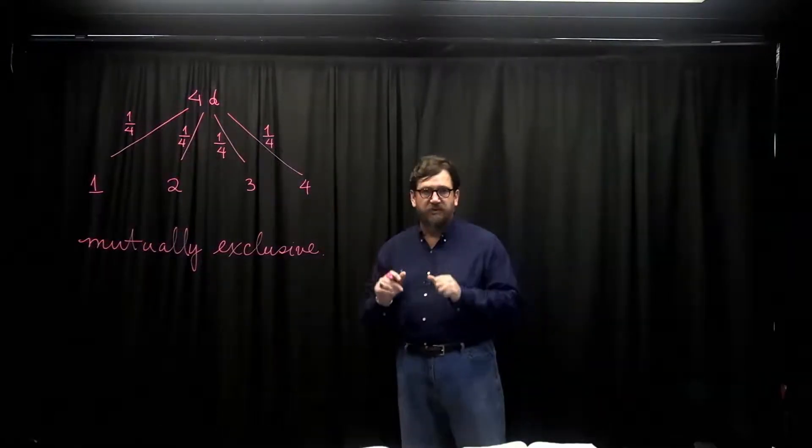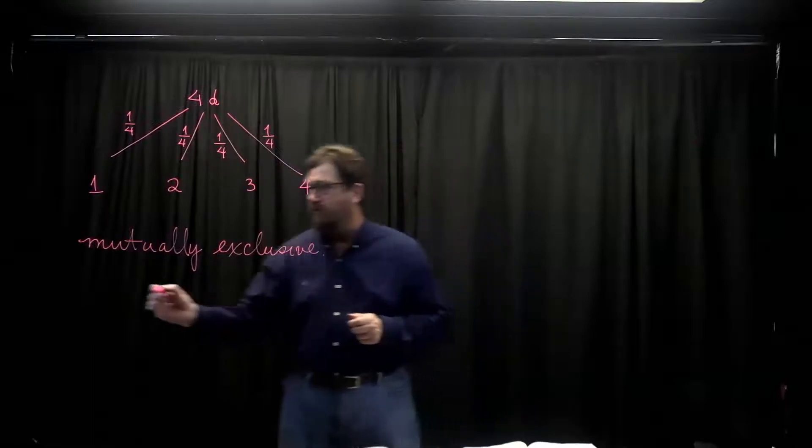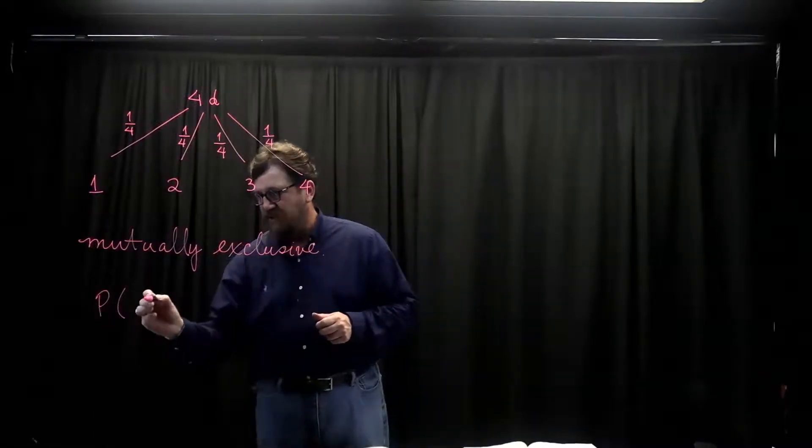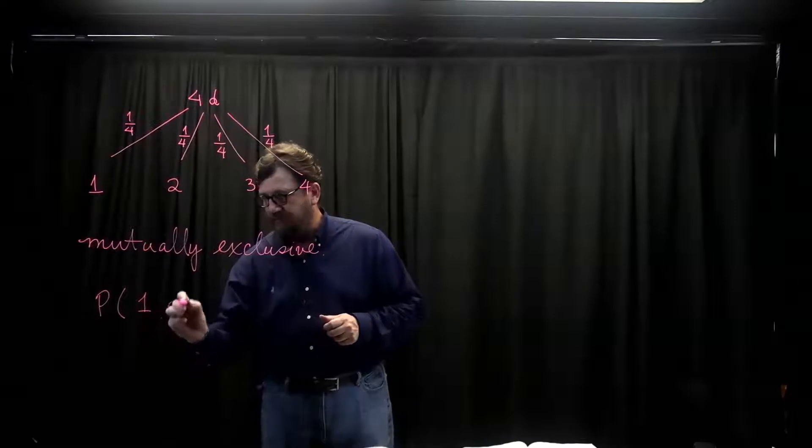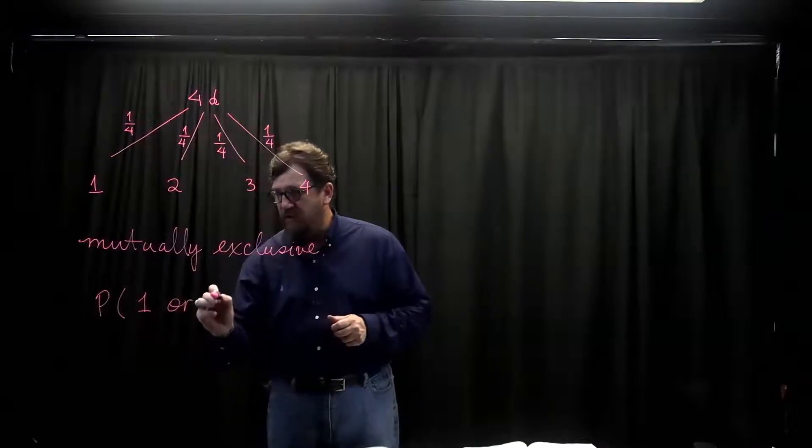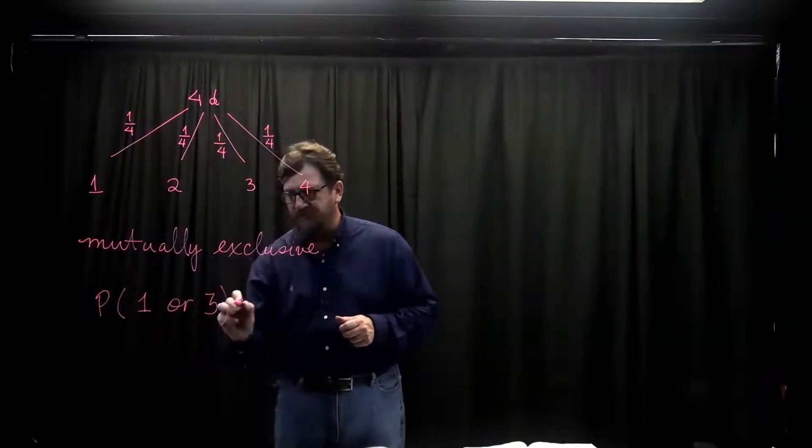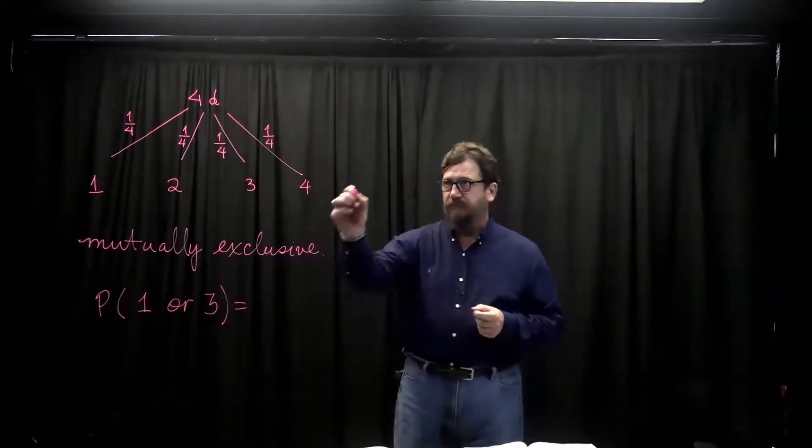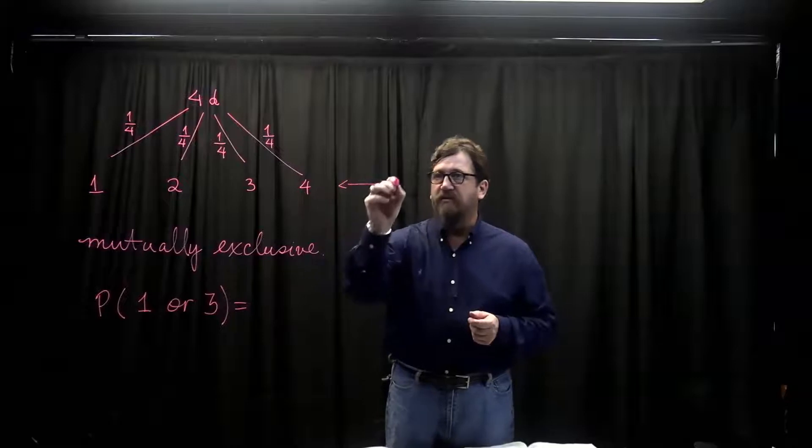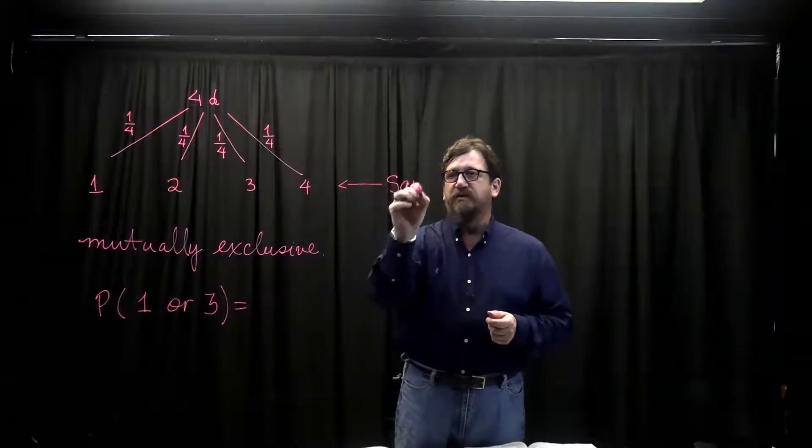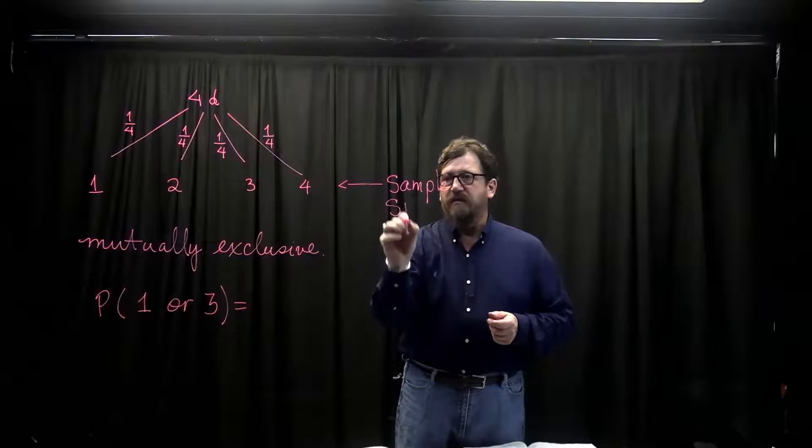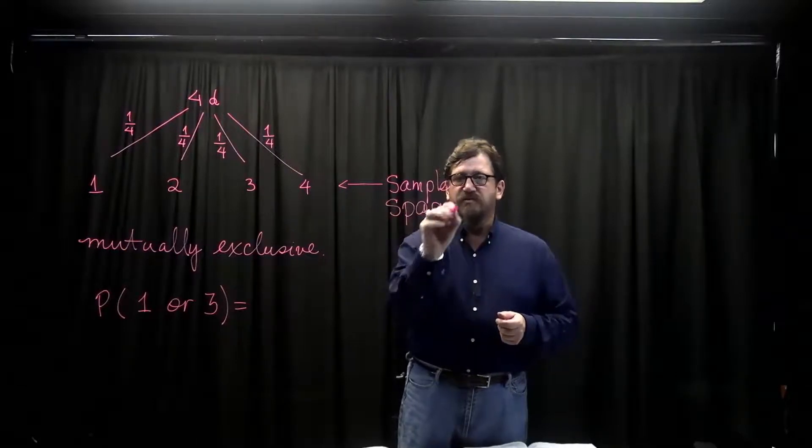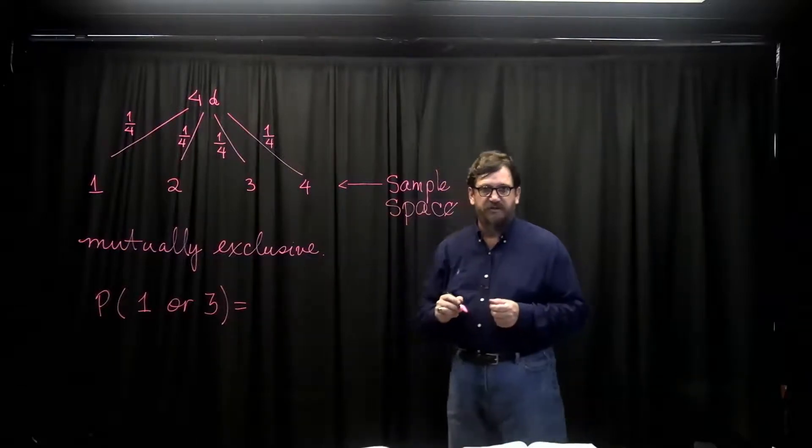But a mutually exclusive question might be what is the probability of tossing a 1 or tossing a 3? Well, look at your sample space. That is your total outcomes right here. That's what this is referred to as, is the sample space. Your sample space has four options in it.